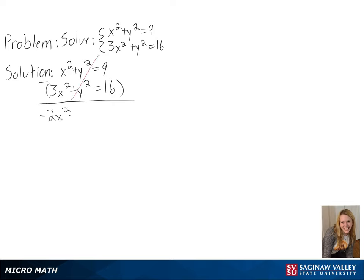To do this we will subtract our equations so that our y's cancel and after simplifying we are left with x as a positive or negative square root of 7 over 2.